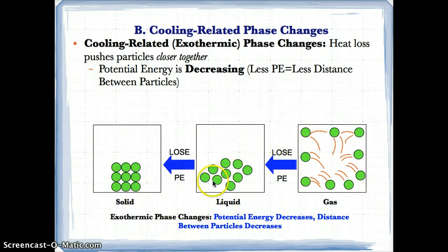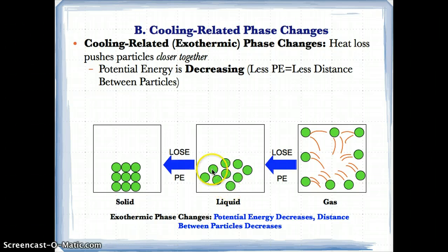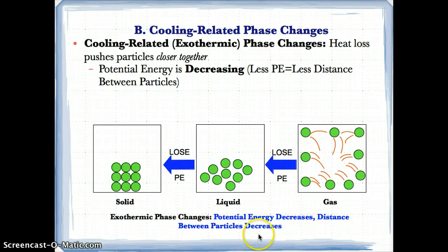Going from liquid to solid: if you lose heat from a liquid, you lose potential energy, and if you lose potential energy, you lose distance between the particles so much so that a liquid changes phase to a solid. To summarize: gases have the greatest distance between them. If you lose heat, you lose potential energy; you lose potential energy, you lose distance — it changes phase to a liquid. For a liquid, if you lose heat, you lose potential energy, and if you lose potential energy, the distance decreases so much that the liquid changes phase to a solid. Exothermic phase changes have potential energy decreasing because heat is lost, and as a result the distance between the particles decreases.